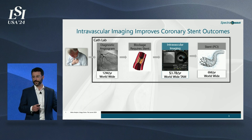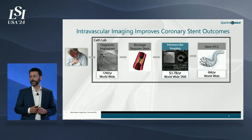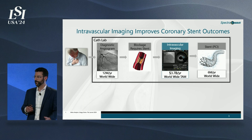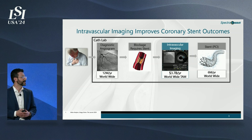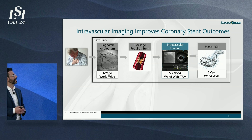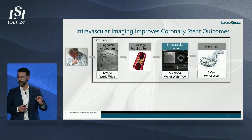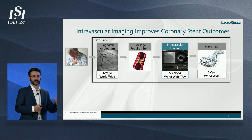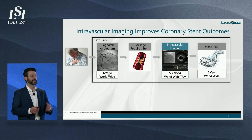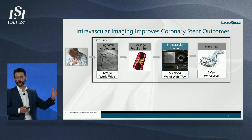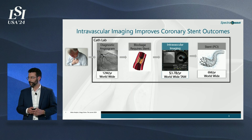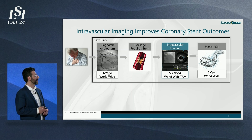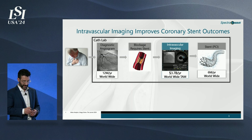Intravascular imaging involves a device that goes inside the blood vessel, typically through femoral or radial artery access, to evaluate not just the inner lumen visible with angiography, but also the native dimensions of the vessel prior to disease — as well as other morphologies that are critical to preparing the vessel for a successful stenting outcome.